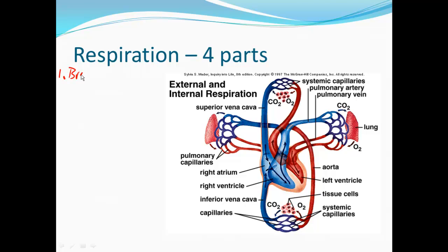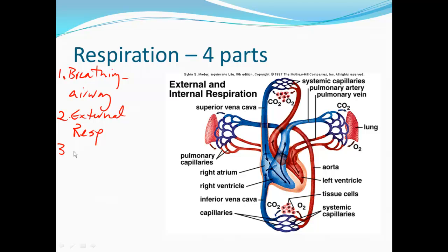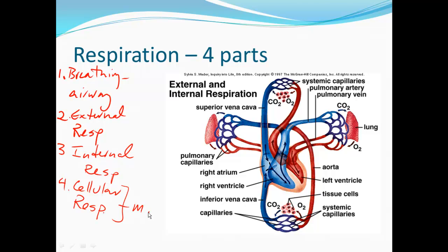We're really only conscious of one part — breathing — which involves the airway. Part two is called external respiration: this occurs between the pulmonary capillaries and the air in the lungs. Part three is internal respiration, happening inside the body between our systemic capillaries and body cells. Part four, the last and most important, is cellular respiration — it happens in the mitochondria and is what keeps us alive by making ATP.